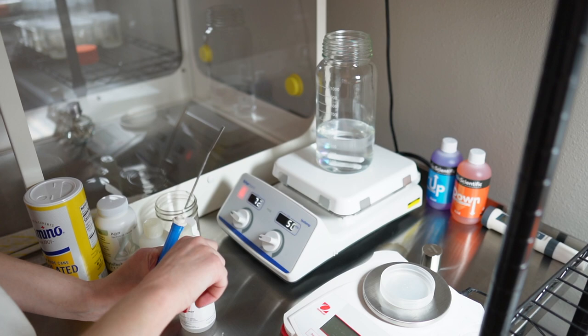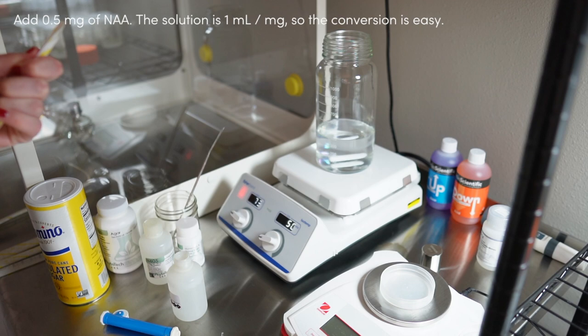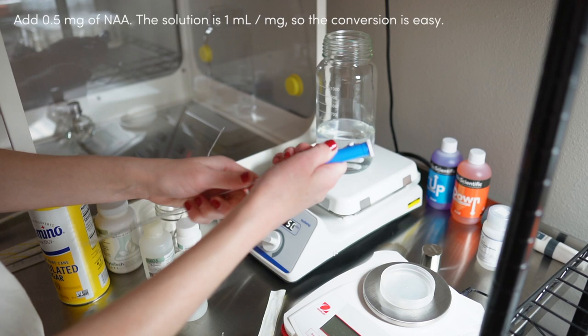The first thing that you saw me do was add 400 milliliters of distilled water to the glass container, and the second thing was just adding half a milliliter of plant preservative mixture, or PPM, which just helps reduce the contamination potential.